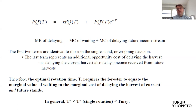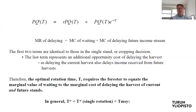A similar situation arises if we introduce harvesting costs. As mentioned in the previous lesson, we can think of price P as a net price — total sales minus harvesting costs. If harvesting costs are baked into P, then an instantaneous change in harvesting costs would only affect this constant P. But since P cancels out, a one-time change in harvesting costs also doesn't change anything.